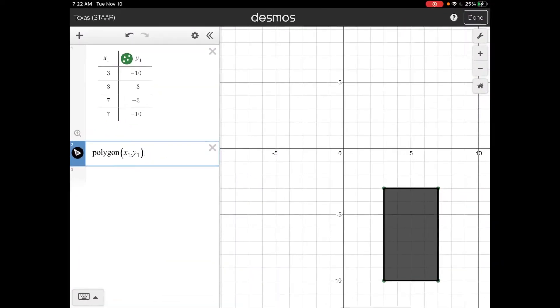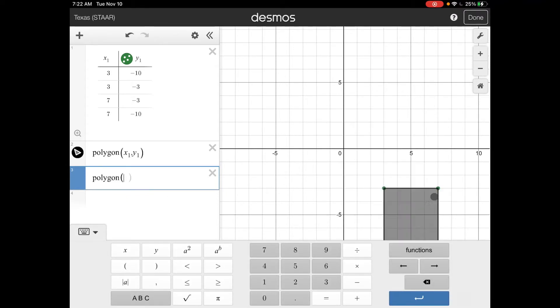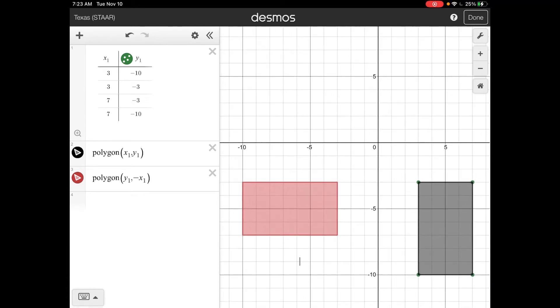So that's what I'm going to put in for my second polygon, because I'm going to put in another polygon. And now I want it to say y1, because I'm still talking about this y, this list here, and then I want the opposite of x1, so negative x1. And you can see here that it went ahead and rotated that.